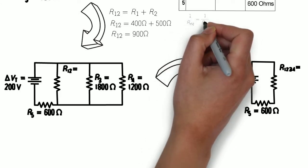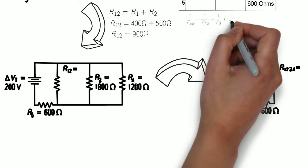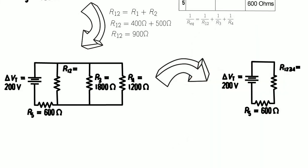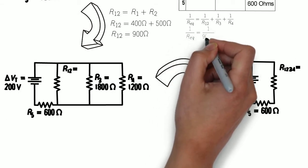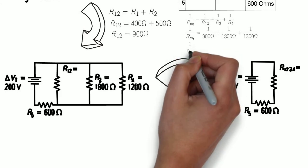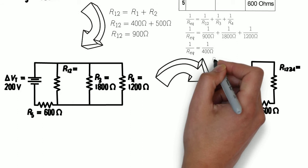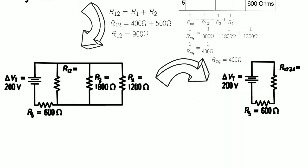And we can replace these three resistors in parallel with one equivalent resistor. To do this, we're going to have to solve for R equivalent with the equation 1 over REQ equals 1 over R12 plus 1 over R3 plus 1 over R4. When we input our values and solve for our equivalent, we get an equivalent resistance of 400 ohms.